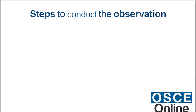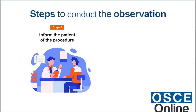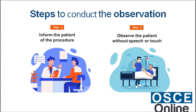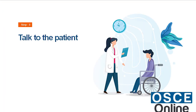Inform the patient of the procedure, explain and discuss the assessment, and gain consent to assess the GCS. Observe the patient without speech or touch. If the eyes are closed, call out their name and talk to the patient. Note whether they are alert and giving attention, or restless, lethargic, and drowsy.